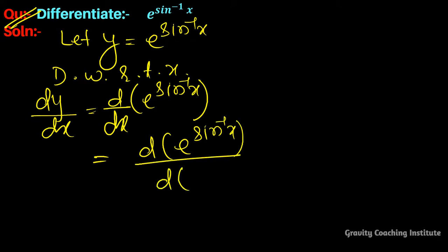Here we write e to the power sin inverse x and multiply by the derivative of sin inverse x.